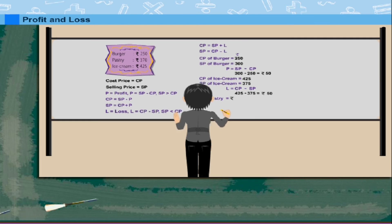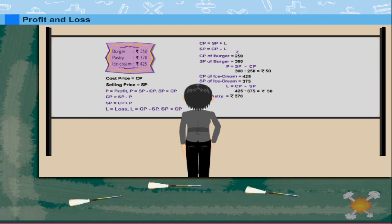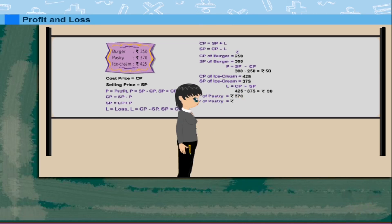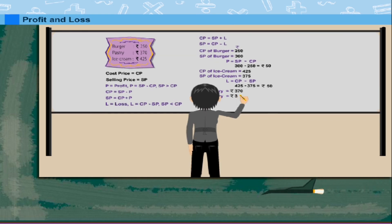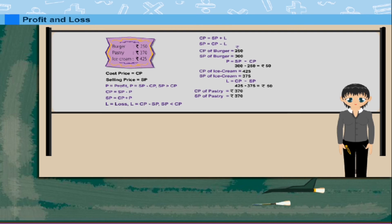CP of pastry is Rs.370 and SP is also Rs.370. So, there is no profit and no loss. Good business, ma'am.